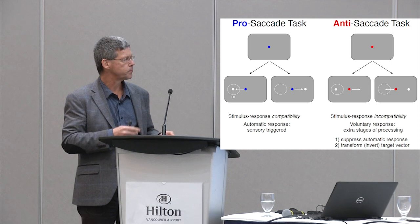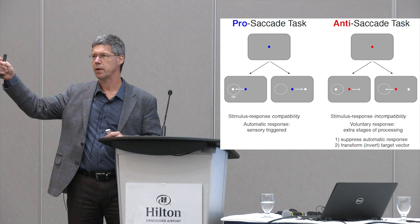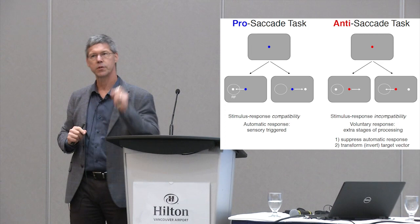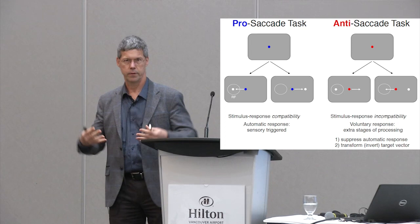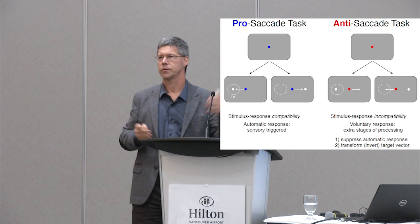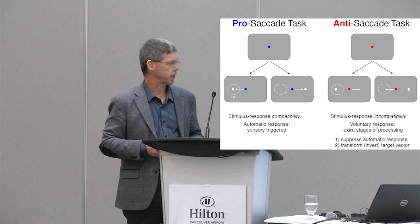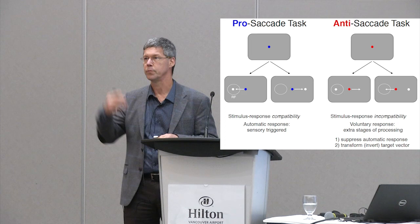We can do the opposite — what we call the anti-saccade. In this version, participants are asked that when something suddenly appears, when this visual target appears on the left, we want them to look in the opposite direction. They must suppress that automatic sensory-driven response and instead look away. That requires much higher orders of cognitive function and brain control — you have to suppress an automatic response and do something opposite. People who have impulsivity challenges make lots of mistakes in this task, and this is where the frontal lobes come in — the parts of the brain that allow us to interact flexibly with our environment.